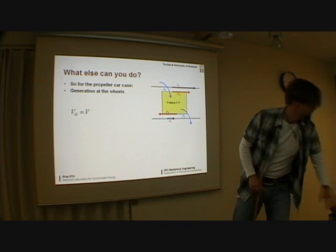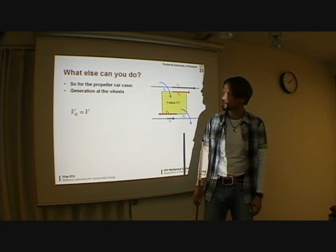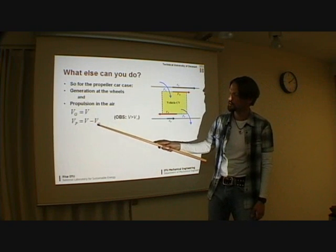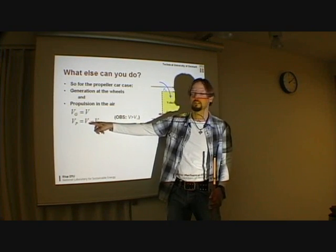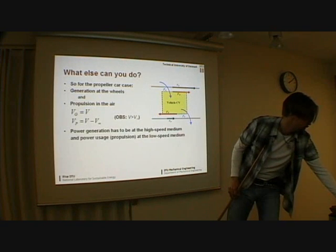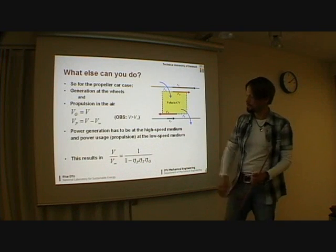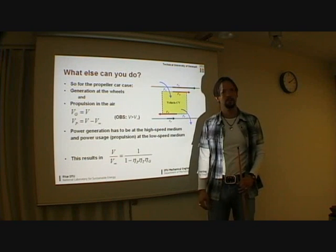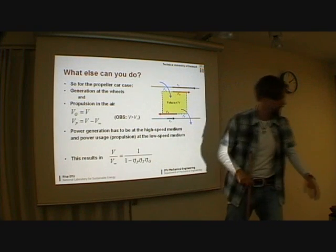Generation at the wheels, relative velocity to the wheels is the vehicle velocity, and propulsion in the air. The air velocity is vehicle velocity minus free-stream velocity. And now this needs to be bigger. We need to move faster than the air in order for velocities to come from the same side. So I stick those into the general equation and end up with something like this. It looks almost like the other one. And you can see also for this case, when the efficiency is 10 to 1, the velocity ratio tends to infinity. So this is exactly the same theory, just turning things upside down.